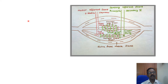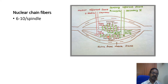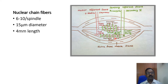The second type is nuclear chain fibers. In these fibers, the nuclei are arranged in a chain format. Each muscle spindle contains 6 to 10 nuclear chain fibers, with a diameter of 15 micrometers and a length of 4 mm.